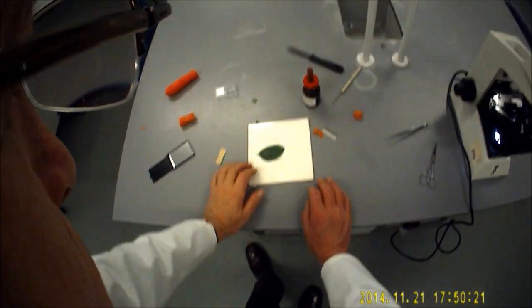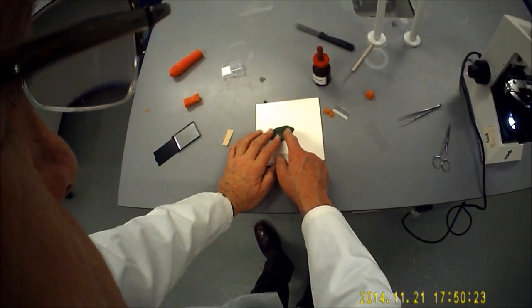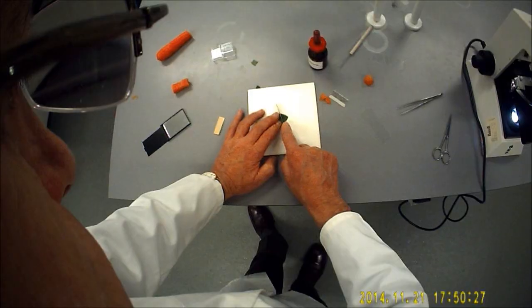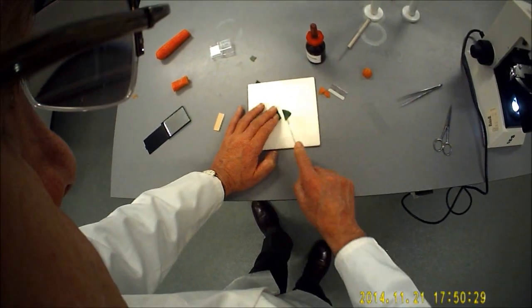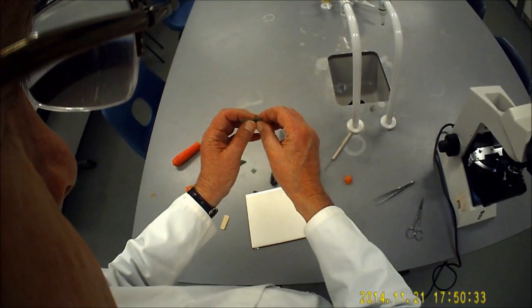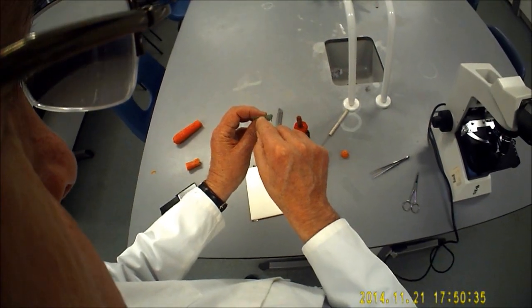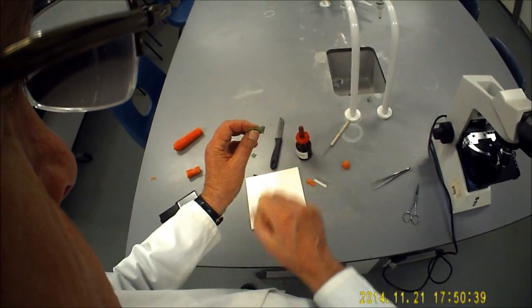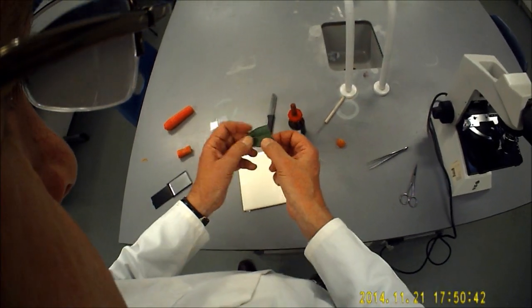So what we're going to do today is prepare a thin specimen of this leaf so that we can look at it end-on. What we want to do is to be able to examine through the microscope that aspect of the leaf and we want to see the different layers of the cells there.